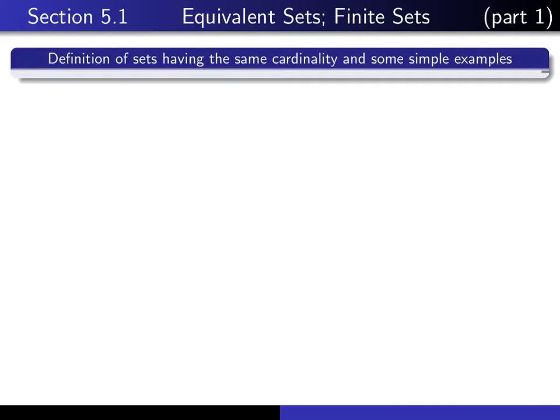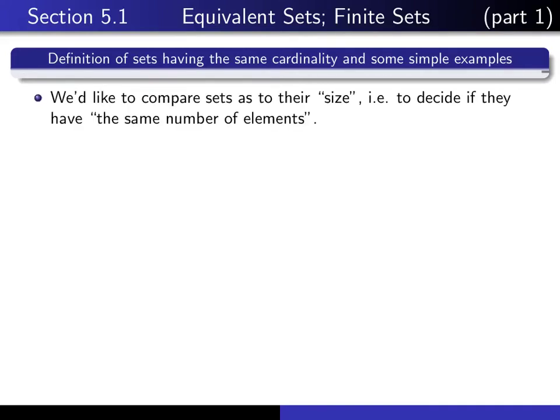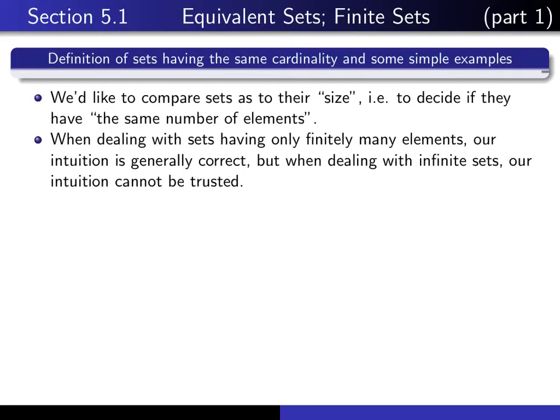In this lecture, we give the fundamental definition which tells us when we can say that two sets have the same cardinality. The idea here is that we like to compare sets as to their size in the sense of the number of elements in them. We're going to find that when we're dealing with sets having only finitely many elements, our intuition is generally correct. It leads us to correct results, but we're going to find that some of the results involving infinite sets